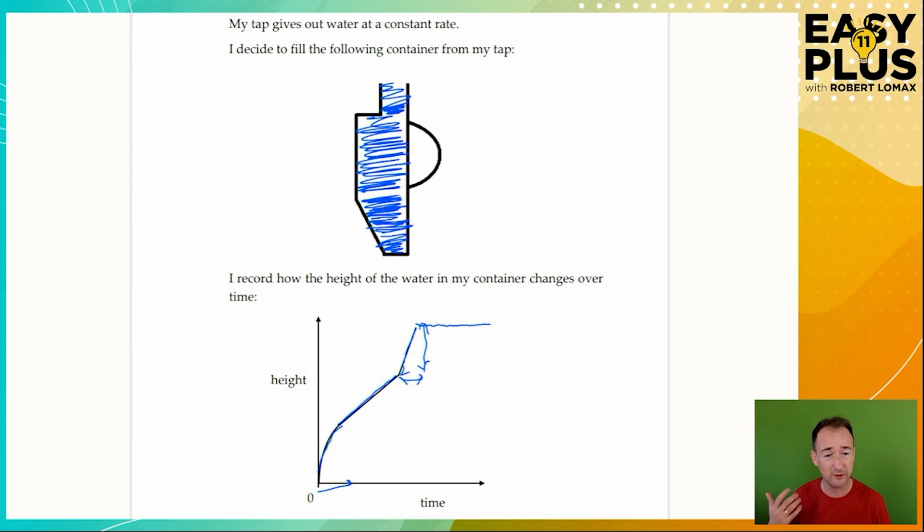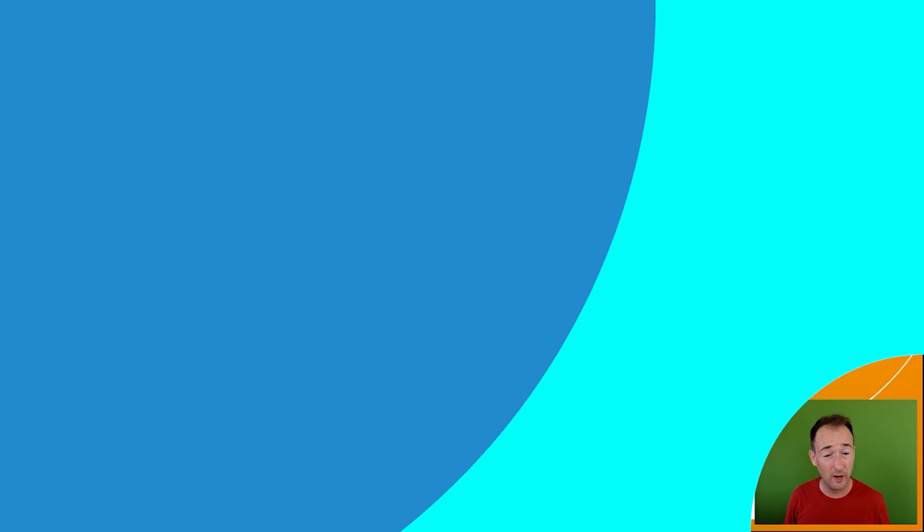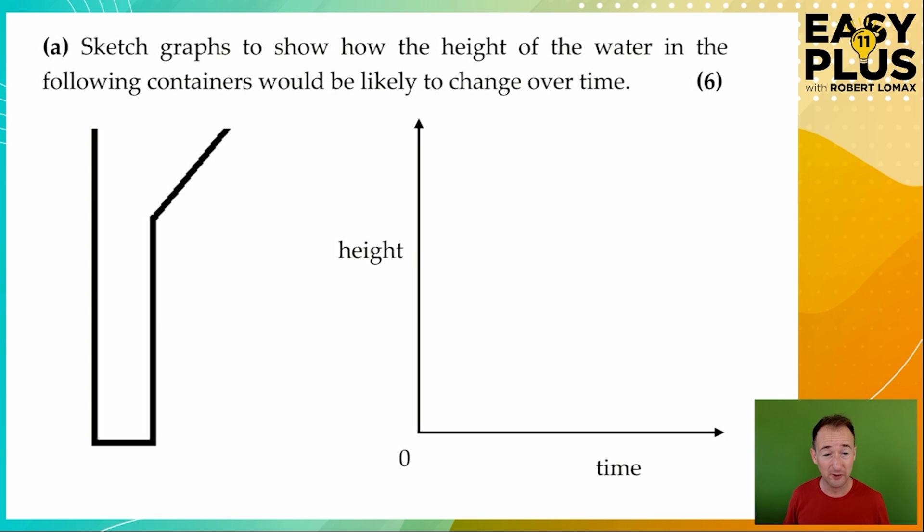Now let's move on to a question where you have to do some of this for yourself. Here you have to sketch a graph for each container to show how the height of water in the container would be likely to change over time. So as we pour the water into this part of the container here it's going to fill at a steady rate because the width or diameter of the container doesn't change. So it's going to be nice and steady. It has to start at 0,0 because when no time has passed no height of water has been gained. So we start there and we fill with a nice straight line.